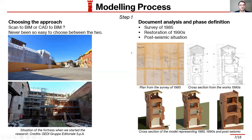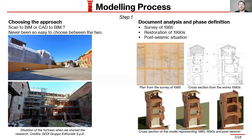With regard to the approach, we first had to choose between scan-to-BIM or CAD-to-BIM. As you can see from the photos, it was easy to choose because there was an active building site, so we could not use terrestrial laser scanning at all. We had to look for plans or digital works about the tower and the fortress. We were quite lucky because we found surveys from 1985, restoration plans and cross-sections from the 1990s, and then the post-seismic situation from ortho images obtained from the municipality.